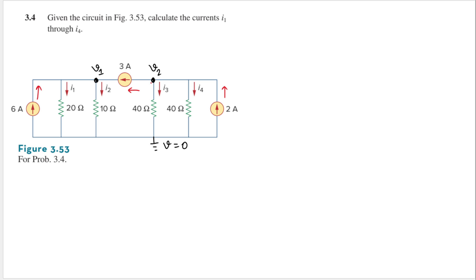We have two nodes, so let's do KCL at each node. KCL at node V1: KCL states that the sum of currents going in equals the sum of currents going out.